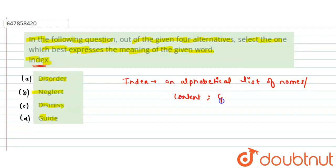And also we can say it is a guide to a book. So this is the option which is option number D, which correctly matches index. So here we have option D correct.